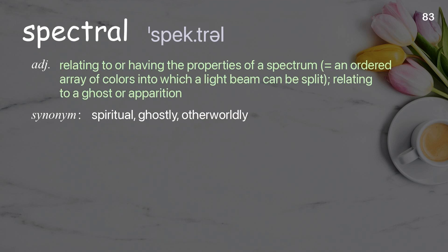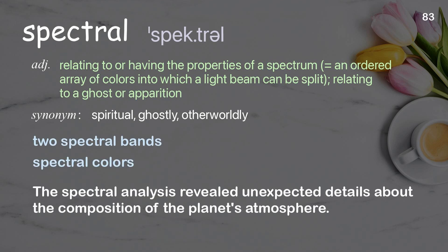Spectral: Relating to or having the properties of a spectrum — an ordered array of colors into which light can be split; also relating to a ghost or apparition. Examples: Two spectral bands. Spectral colors. The spectral analysis revealed unexpected details about the composition of the planet's atmosphere.